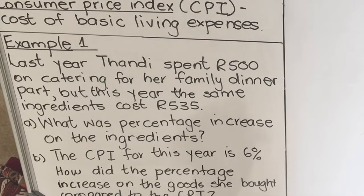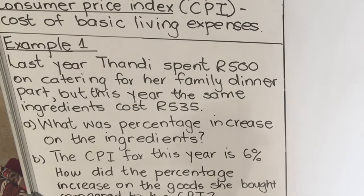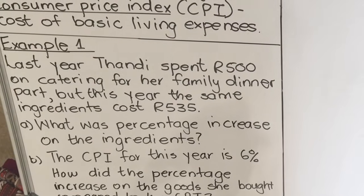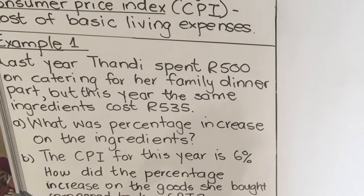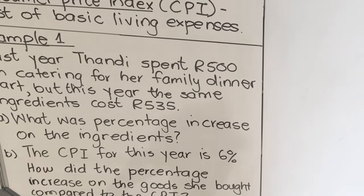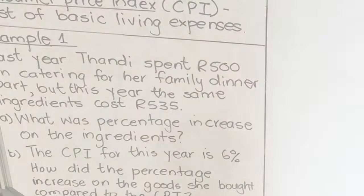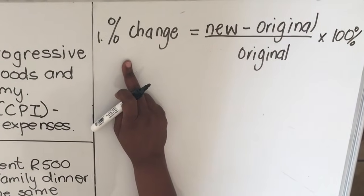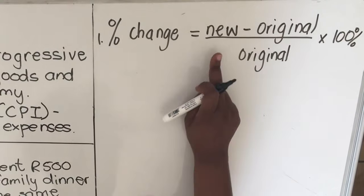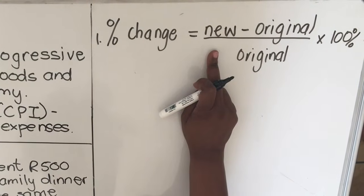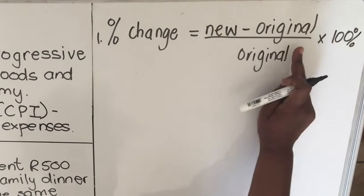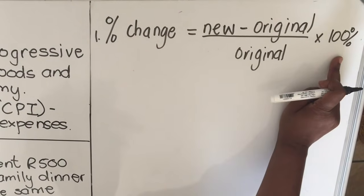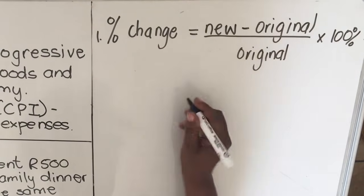The first question is: what was the percentage increase on the ingredients? We're going to use a formula to calculate the percentage increase. The formula says: percentage change equals the new amount minus the original amount, divided by the original amount, multiplied by 100 percent.